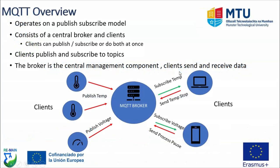We're going to have a quick overview of an MQTT network. As previously mentioned, MQTT operates in a publish-subscribe model, which basically means clients are split into two different types: they're either going to publish or they're going to subscribe. The specific devices acting as clients can both publish and subscribe at the same time, but what the broker will see is a separate subscriber and a separate publisher client.